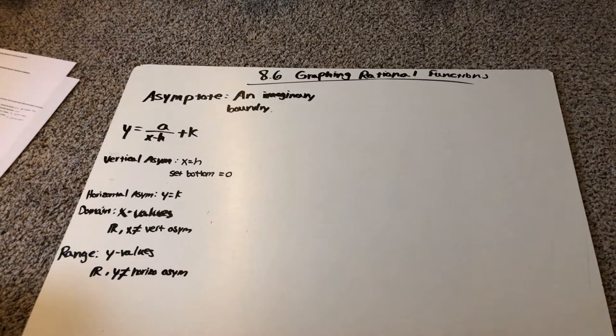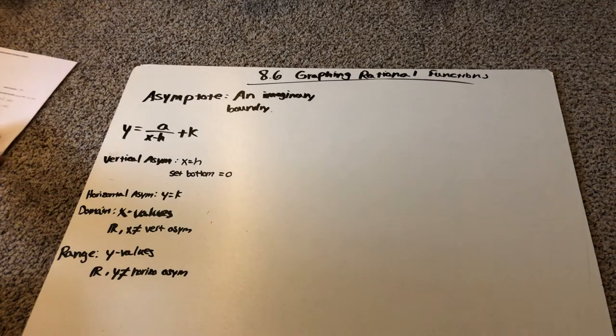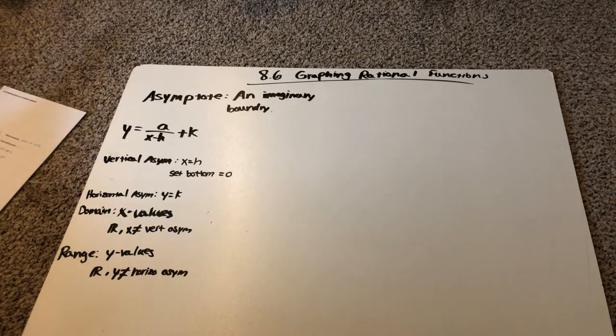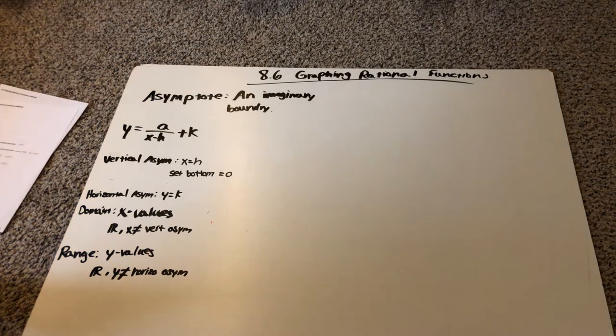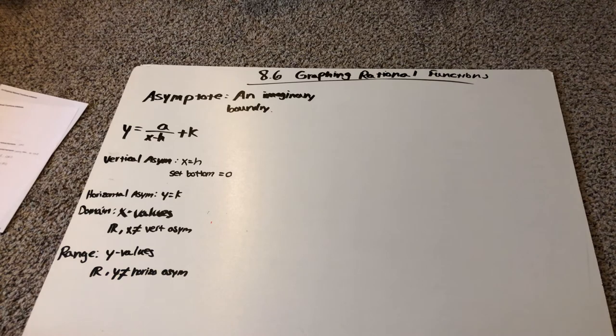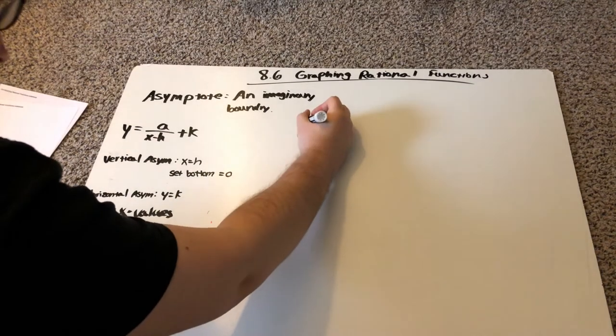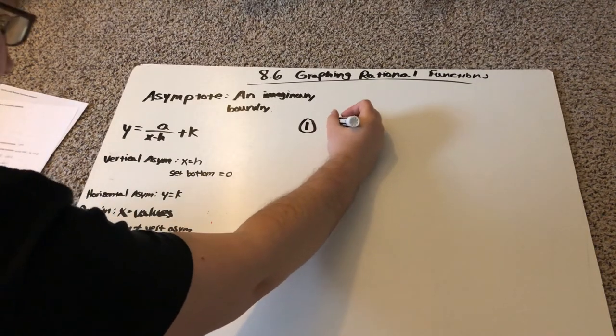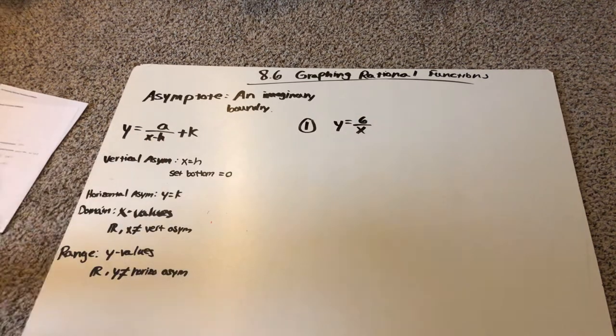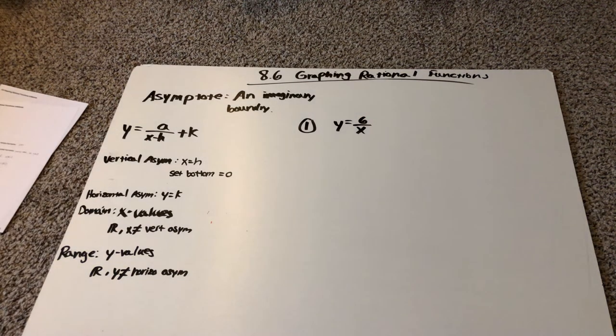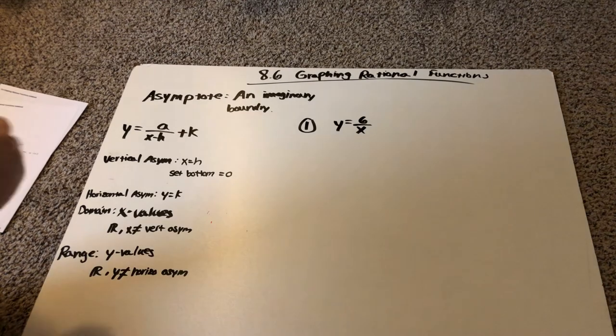I know this kind of looks weird right now, but we're going to do a couple examples and hopefully it's going to be a little bit easier. So for number one, I have y is equal to six over x. So first, I have to label some stuff.